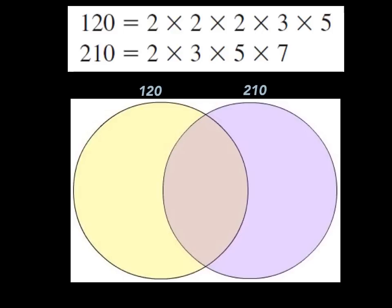Now it's time for you to test yourself. We'll look at two sets of prime factors for the numbers 120 and 210. Pause the video and place these numbers in their appropriate places on the Venn diagram, then restart and see if you did it correctly.